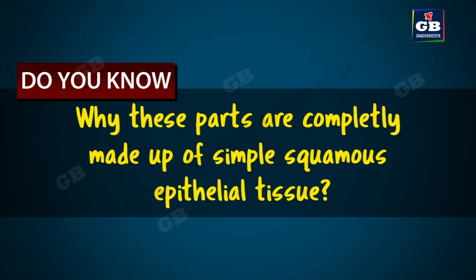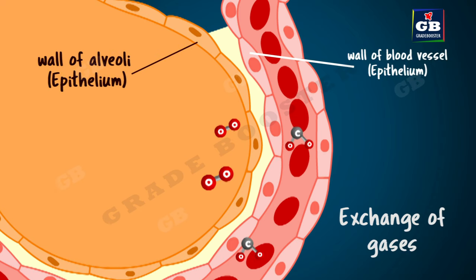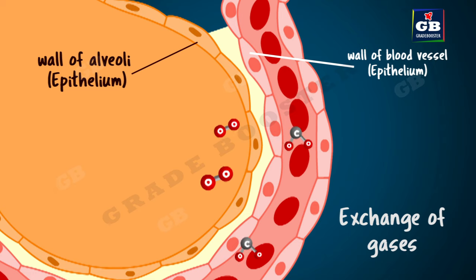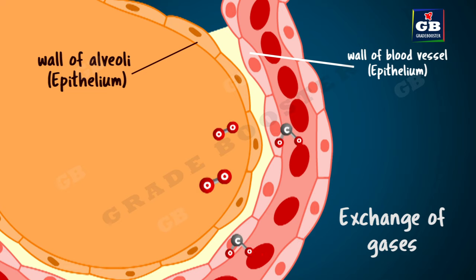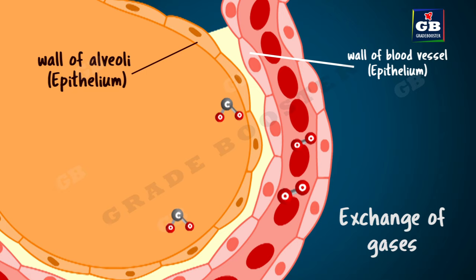Why are these parts completely made up of simple squamous epithelial tissue? Because these parts play an important role in exchange of materials between the body's internal and external environment. For example, the air in the alveoli contains oxygen. It has to cross the wall of alveoli and wall of blood capillary to enter our blood circulatory system. Since these walls are made up of simple squamous epithelial tissue, the oxygen can easily enter our bloodstream. In the same way, carbon dioxide from our blood reaches the alveoli and gets exhaled out.